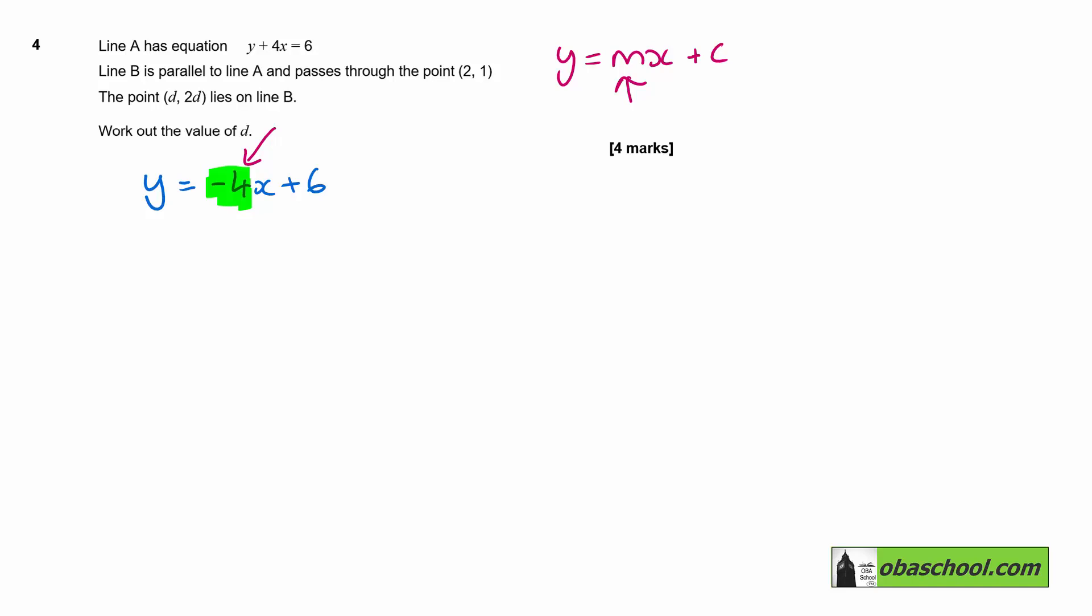It passes through the point 2, 1. So that means we can actually use the values x equals 2 and y equals 1 to work out the equation for line B. So y is going to be negative 4x plus c. That's a parallel line. It will have a different intercept but the same gradient.